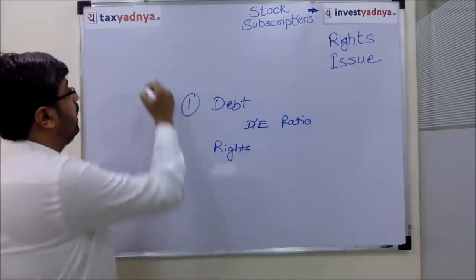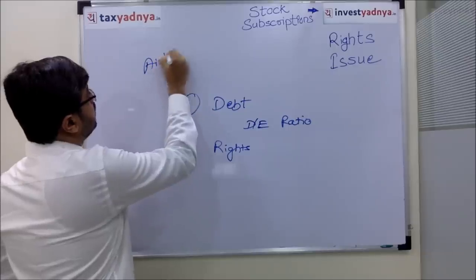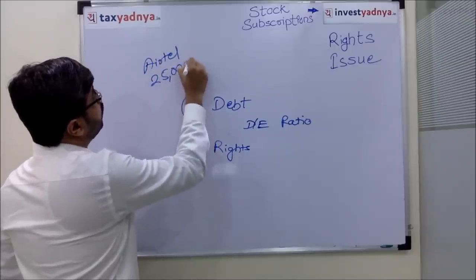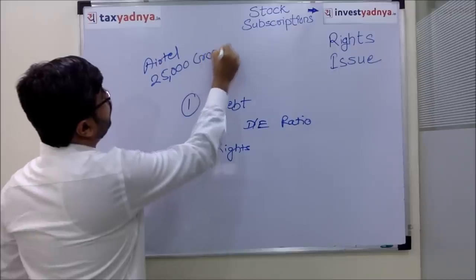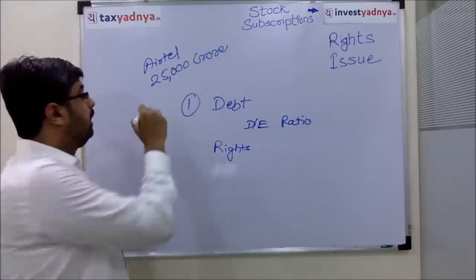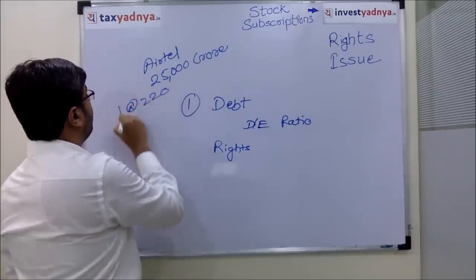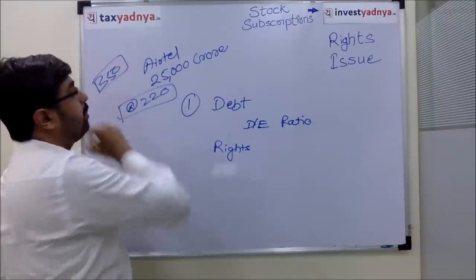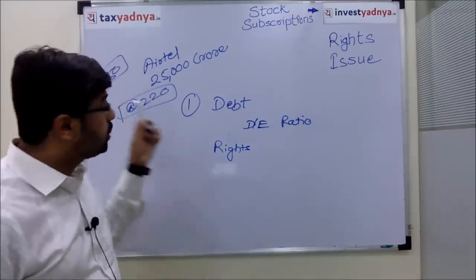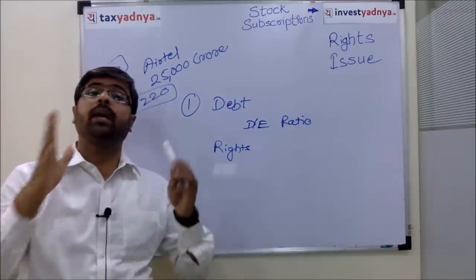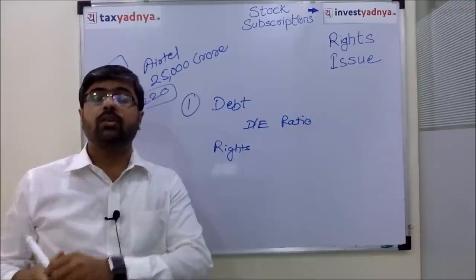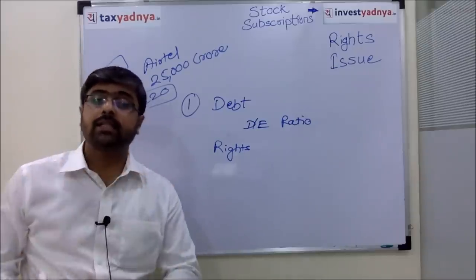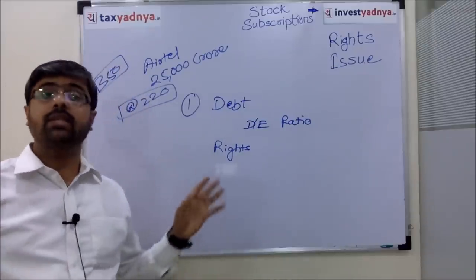As we are talking about in the example, let us discuss Airtel's case. Airtel is raising almost Rs.25,000 crore through a rights issue at Rs.220, while the share is running close to Rs.350. The promoters are also participating — Mr. Sunil Bharti Mittal is also participating as an existing shareholder. So this is a positive sign.